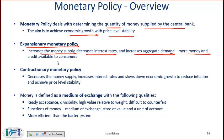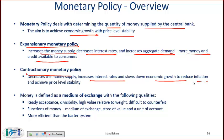More money and credit is available to consumers. Contractionary monetary policy is where the central bank tries to decrease the money supply, increase interest rates, and tries to slow down economic growth in order to reduce inflation and achieve price level stability.